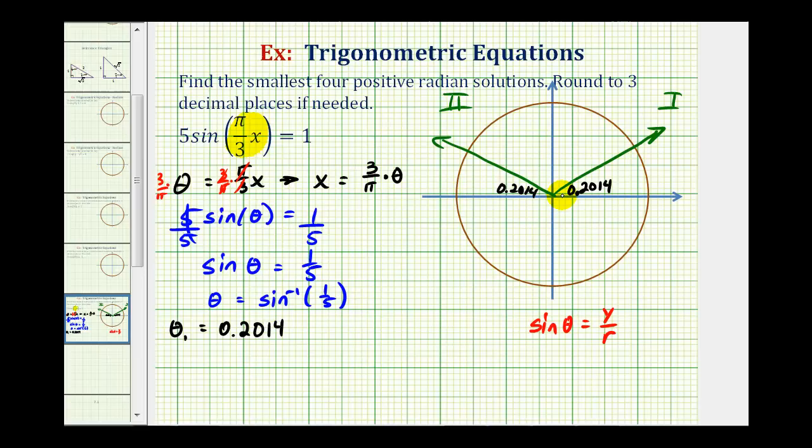So this first angle was determined on the calculator, and then to determine this angle, we could take π radians, or half a rotation, and subtract the reference angle to determine this angle in the second quadrant. So let's go ahead and do that.